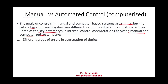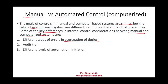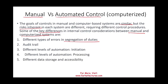The six key differences we'll cover are: different types of errors and segregation of duties — which is a very popular internal control concept — the audit trail, different levels of automation and initiation, different levels of automation and processing, different data storage and accessibility, and different audit and monitoring capabilities.